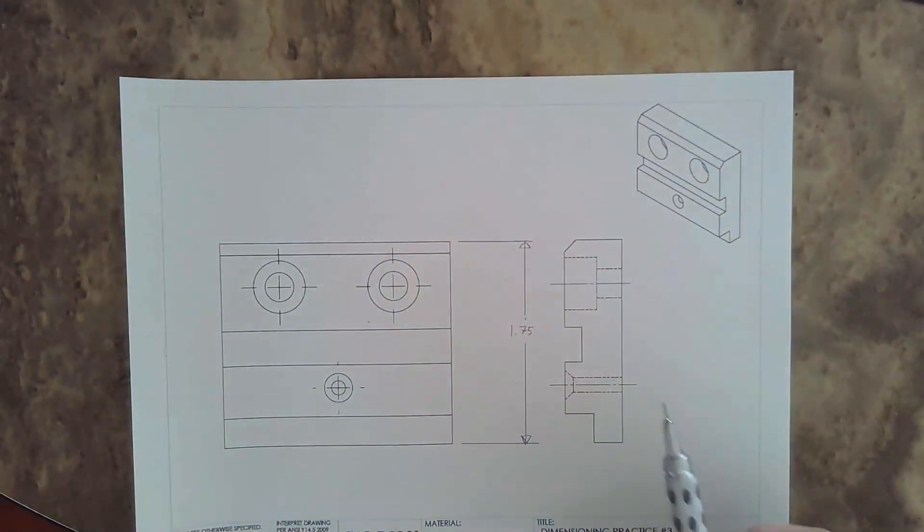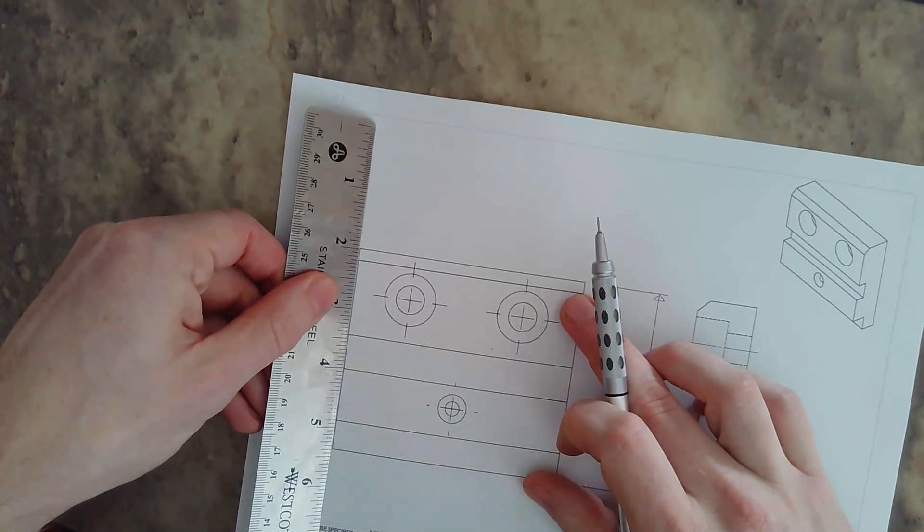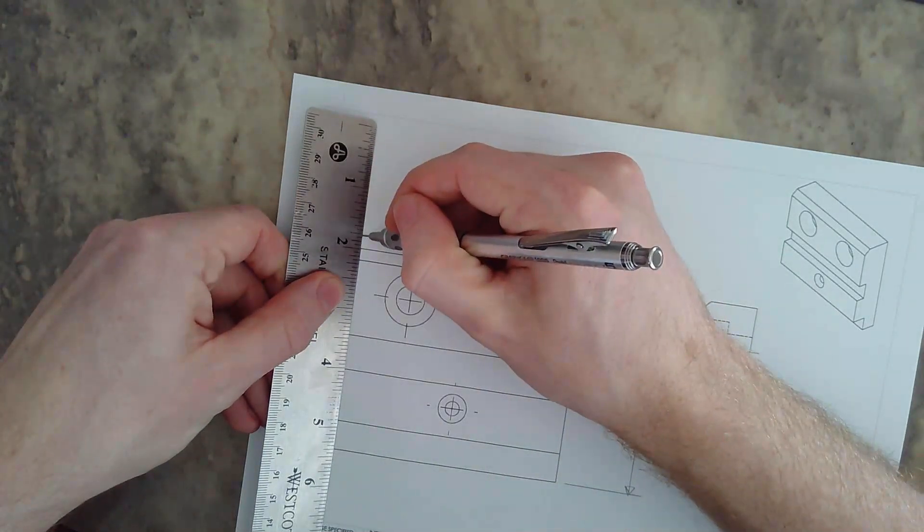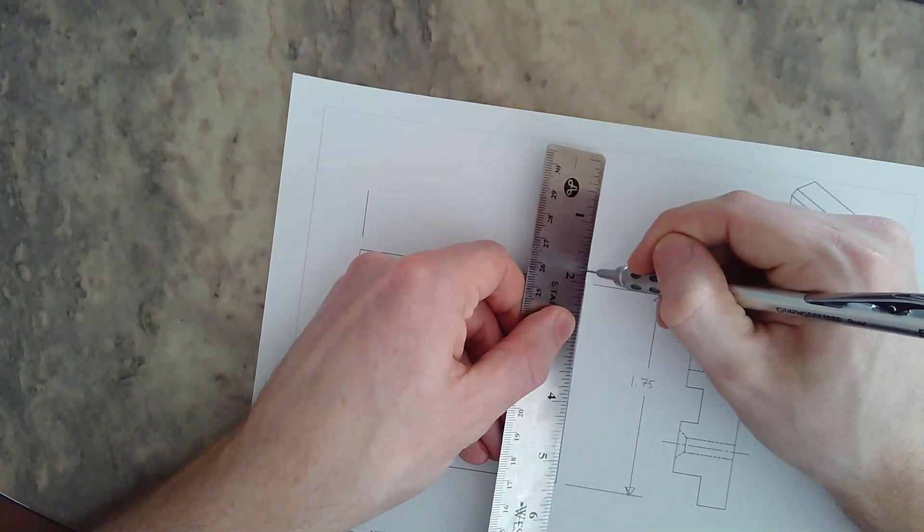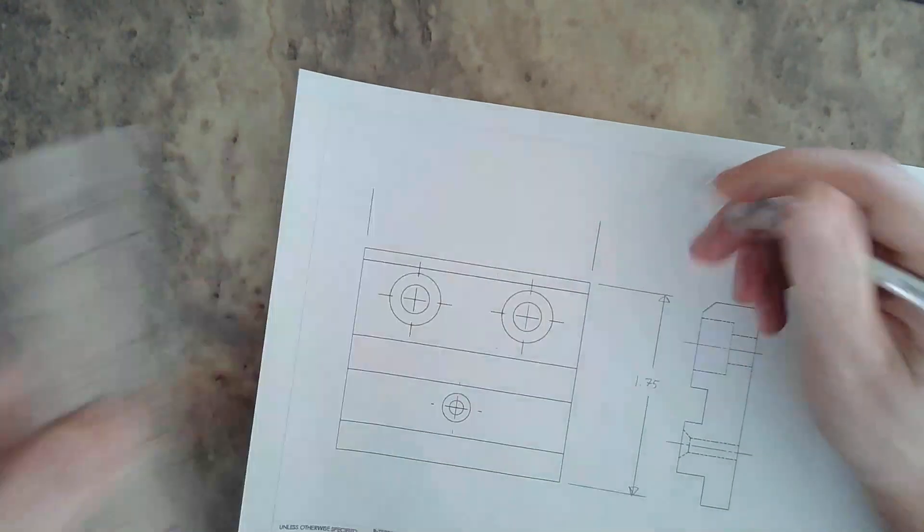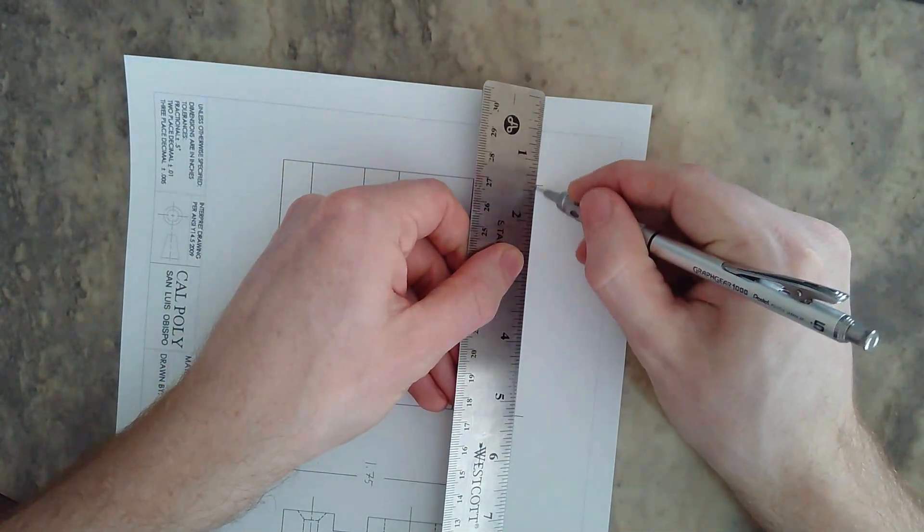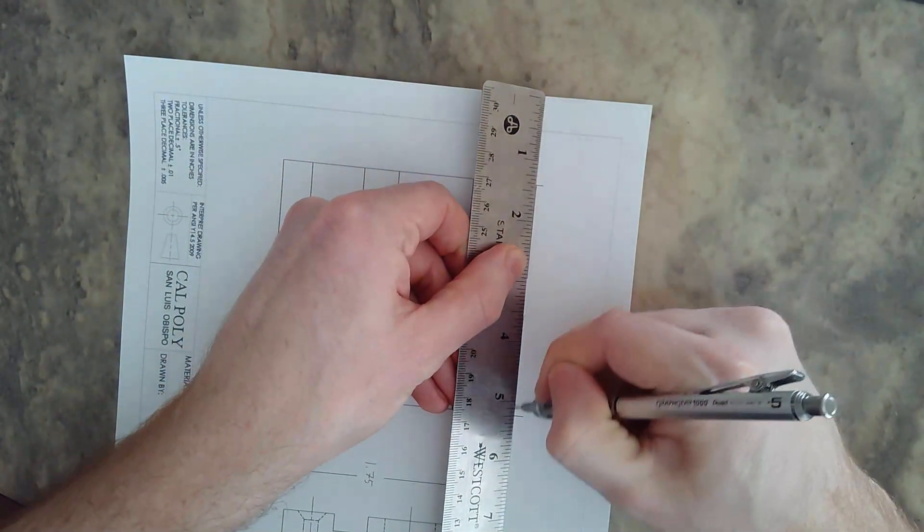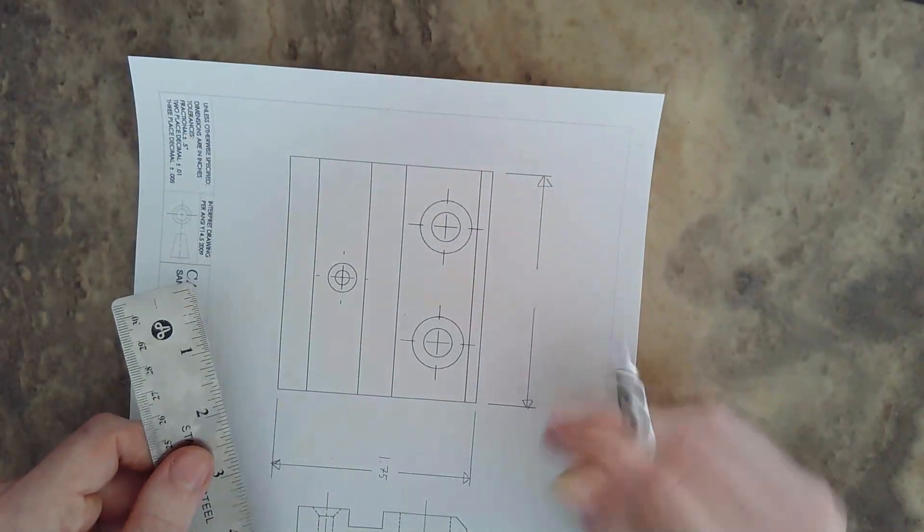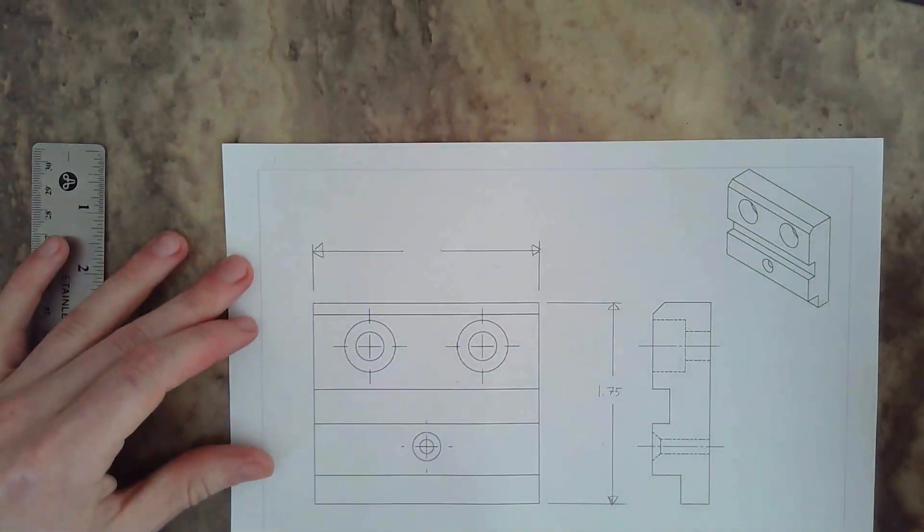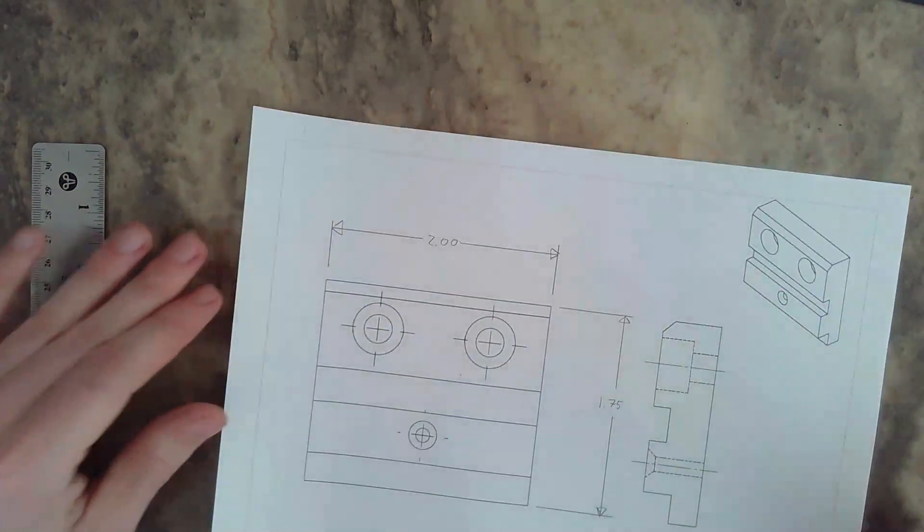I got my height. I'm going to do my overall width now, which will be up here. I'm going to take my extension line off the top of the part here. I got my extension lines, dimension line between them, leaving a break for my dimension. Because I am using a ruler and this class is not focused on reading a ruler, I'm going to stick to two decimal places.